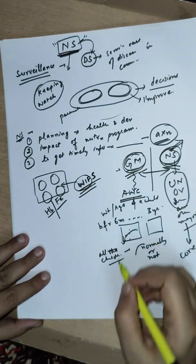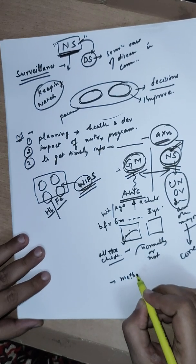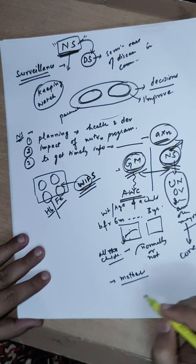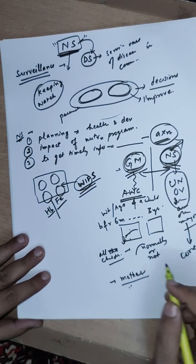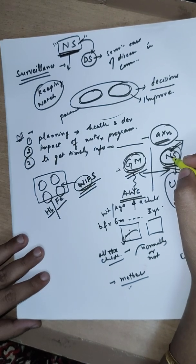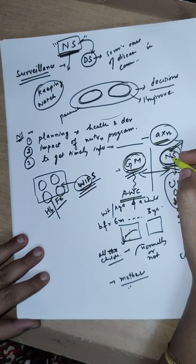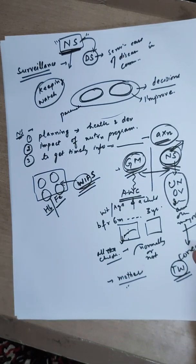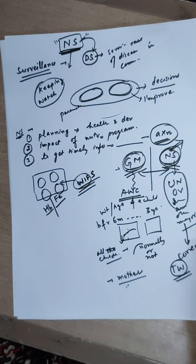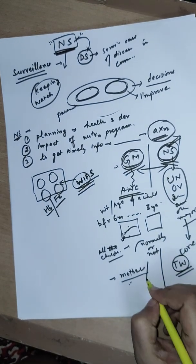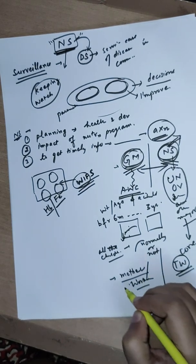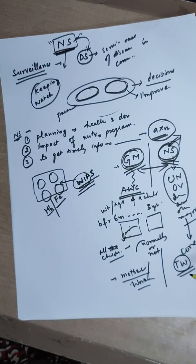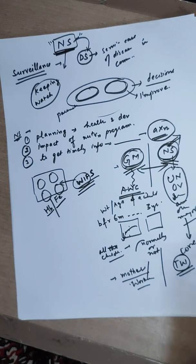Growth monitoring can be done by the mother — she can weigh the child and understand through the growth curve whether the child is growing normally. But in nutritional surveillance, the work is not just for the mother; only trained workers can evaluate the nutritional status of the population. In growth monitoring, the major role is of the mother, with Anganwadi workers also involved. In nutritional surveillance, the major role is played by highly expert team members.